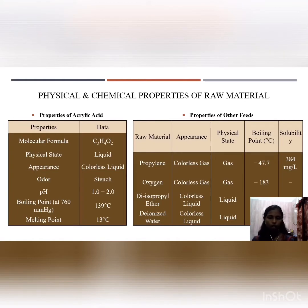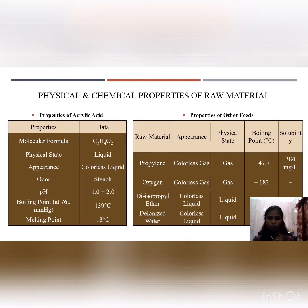For the production of acrylic acid, several raw materials are required: propylene, oxygen, diisopropyl ether, and deionized water. Propylene is a colorless gas with a boiling point of negative 47.7 degrees Celsius and a solubility of 384 mg/L. Oxygen is also a colorless gas with a boiling point of negative 183 degrees Celsius. Diisopropyl ether and deionized water are colorless liquids and both are soluble in water.